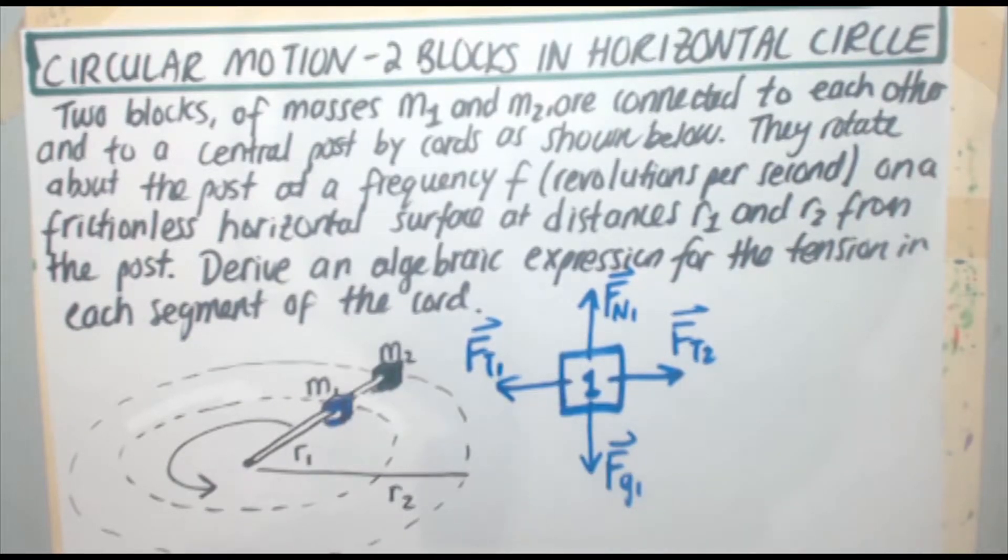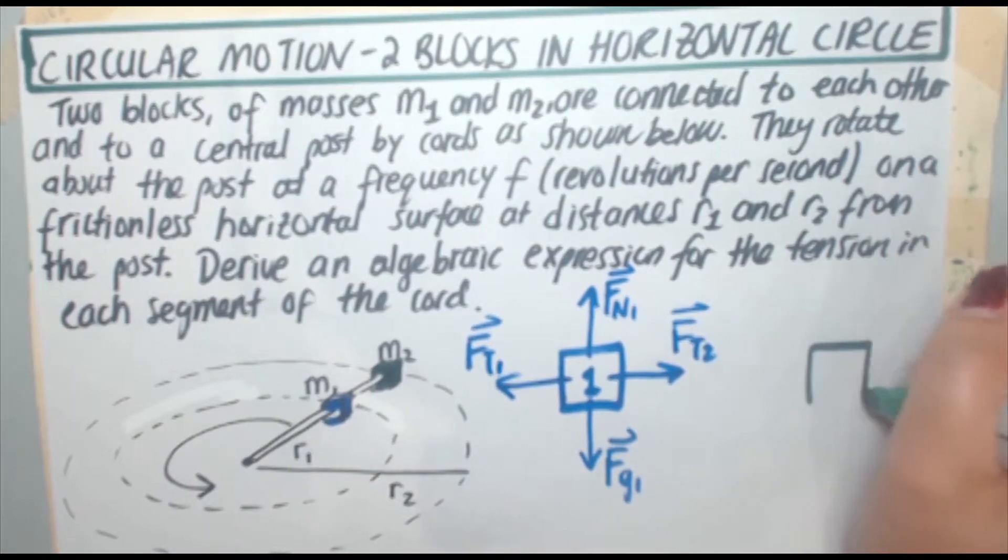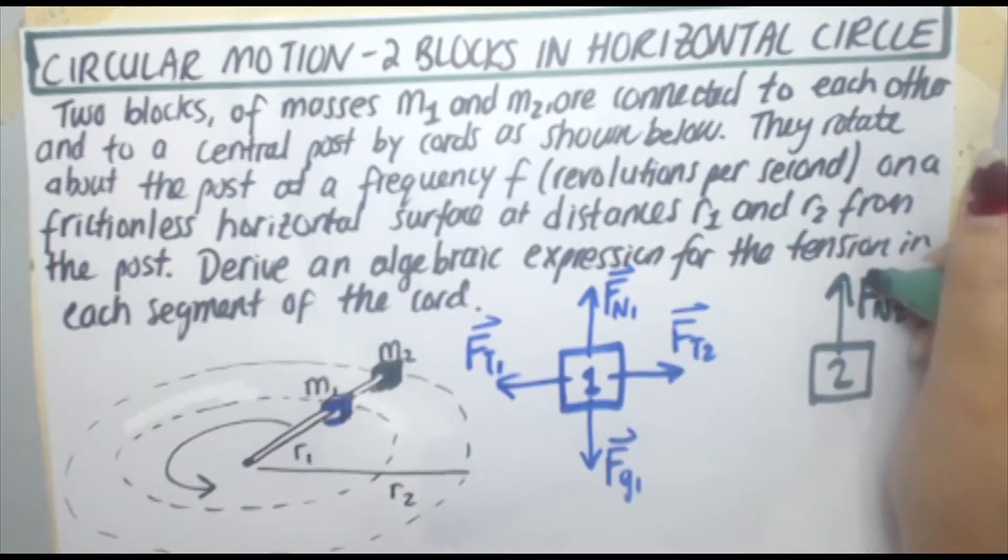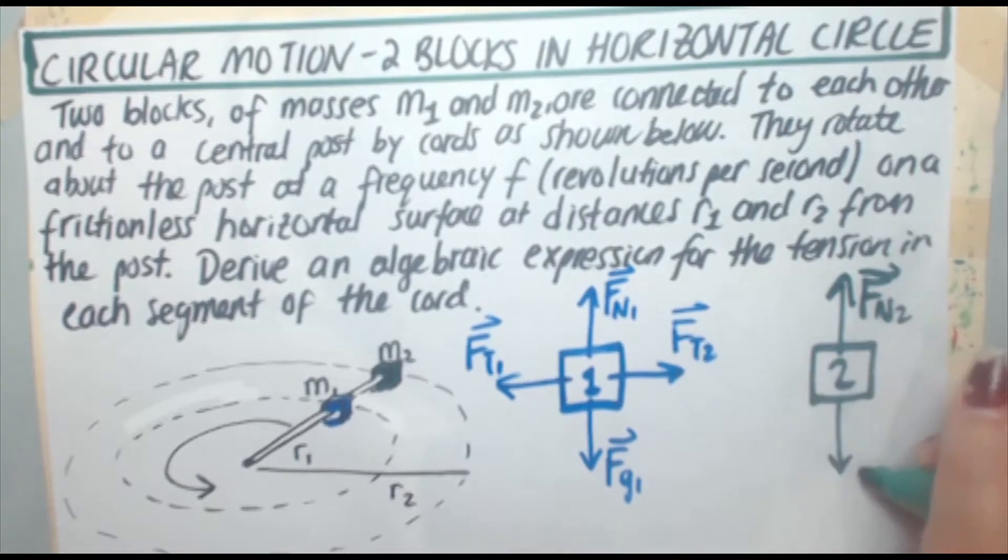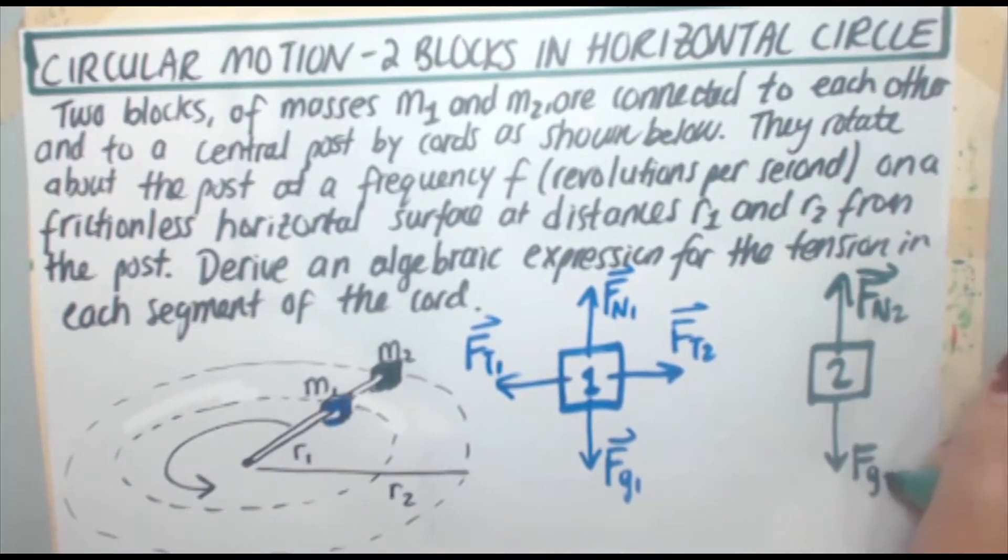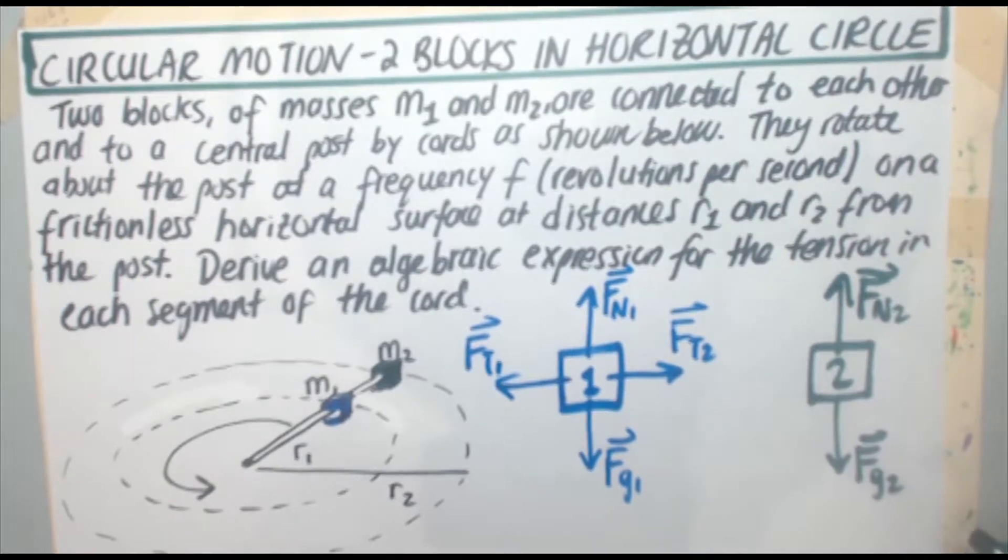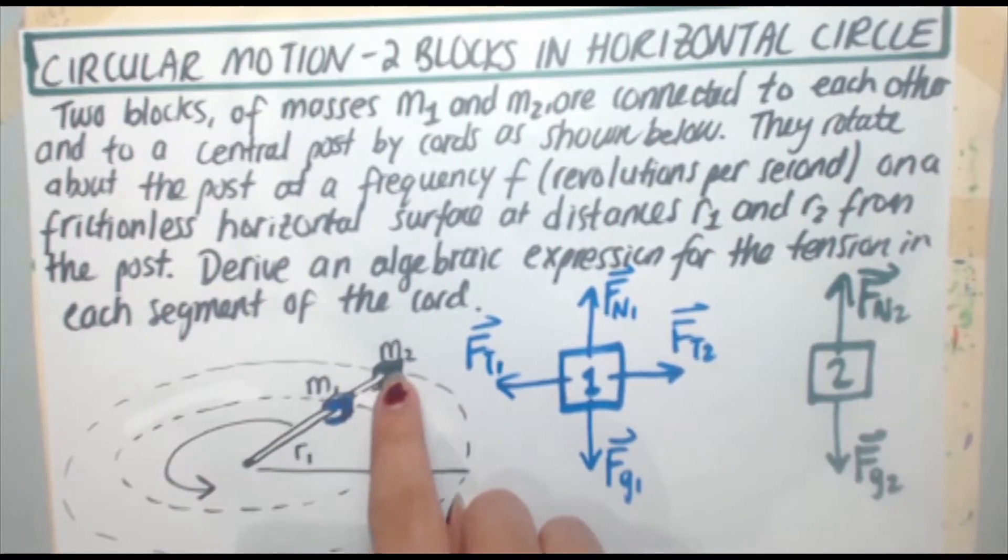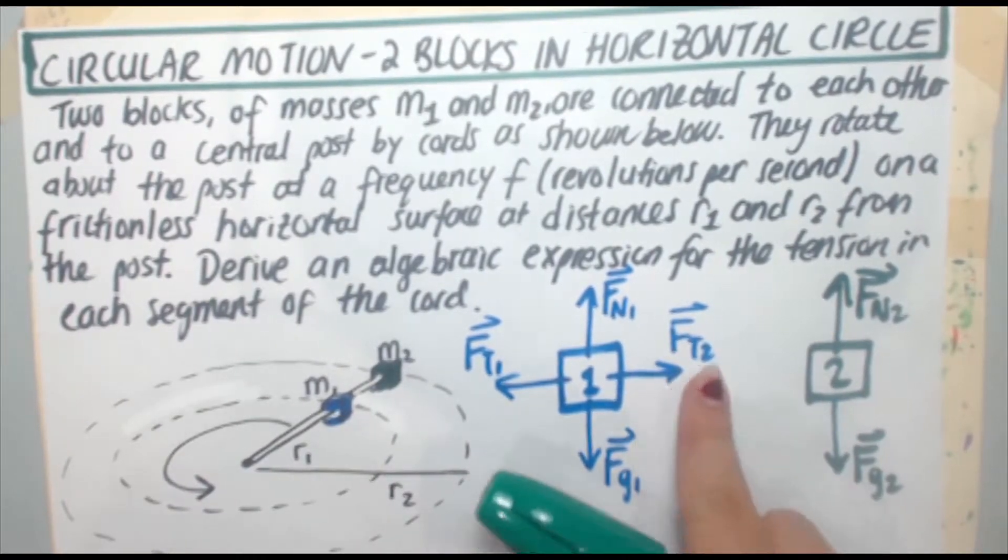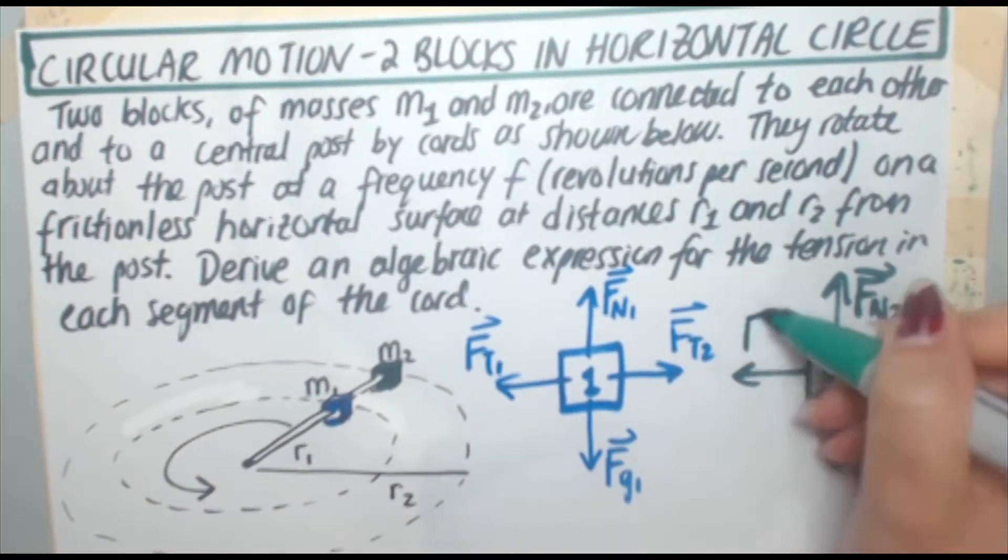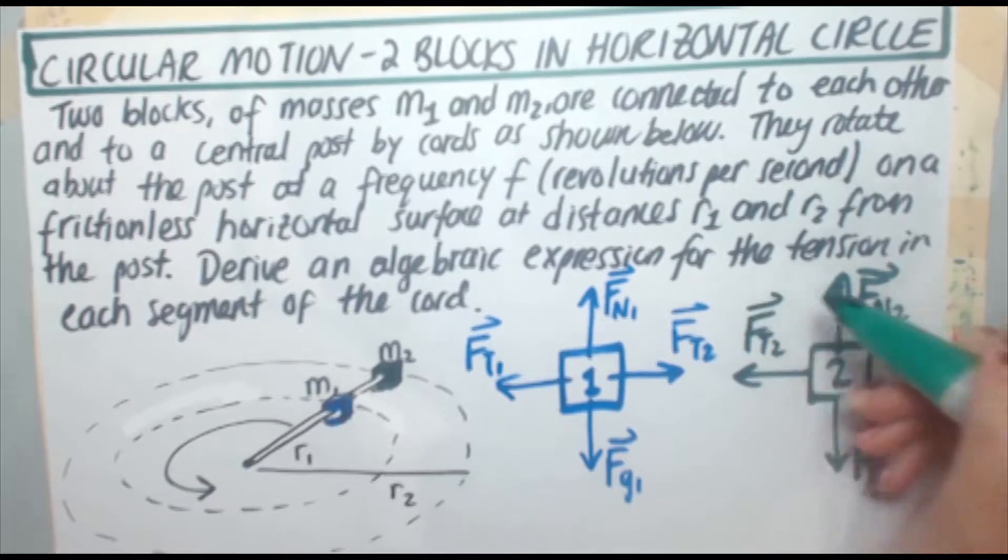So next, block two, same thing, it's got a normal force Fn2. Now, the question does not say, nor should you assume that they're the same mass. So Fn2, Fg2, they're different from Fn1, Fg1. And for two you've got that one tension going inwards and that's the same as this guy right here, Ft2, same magnitude, opposite direction, Newton's third law.